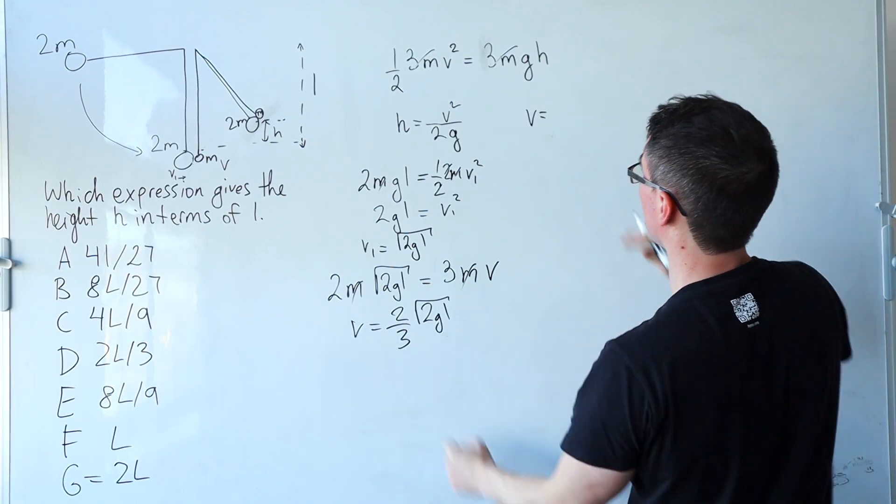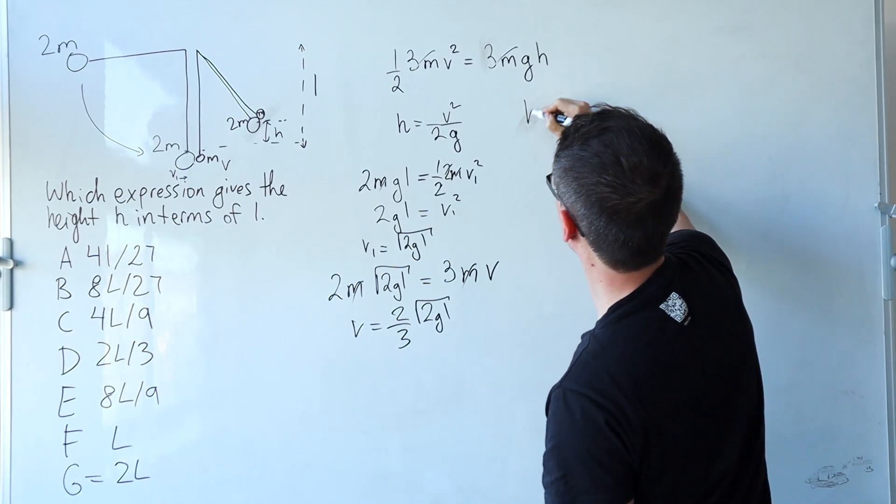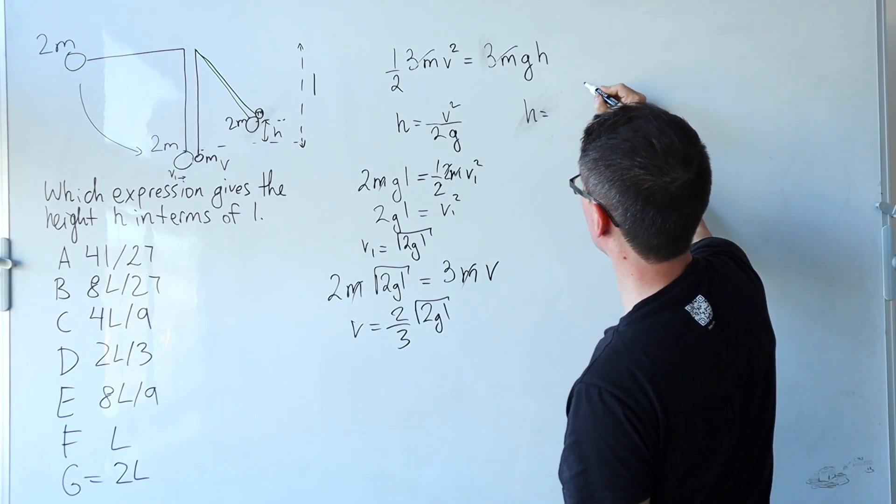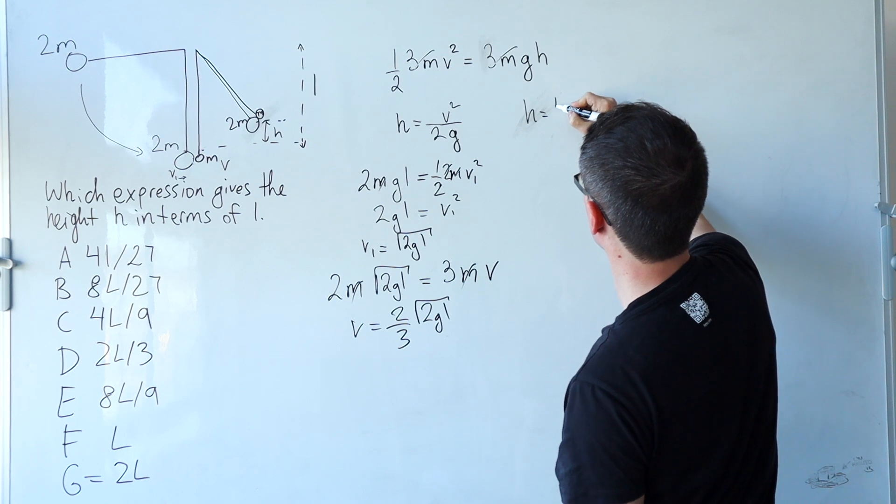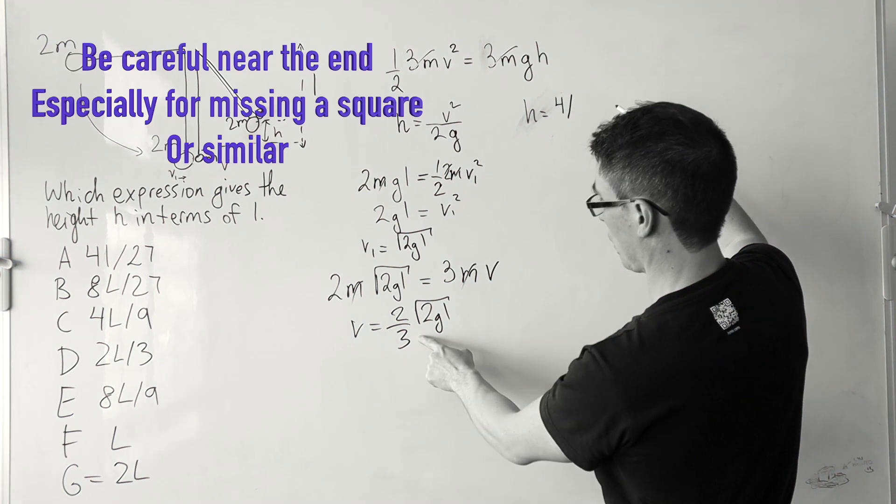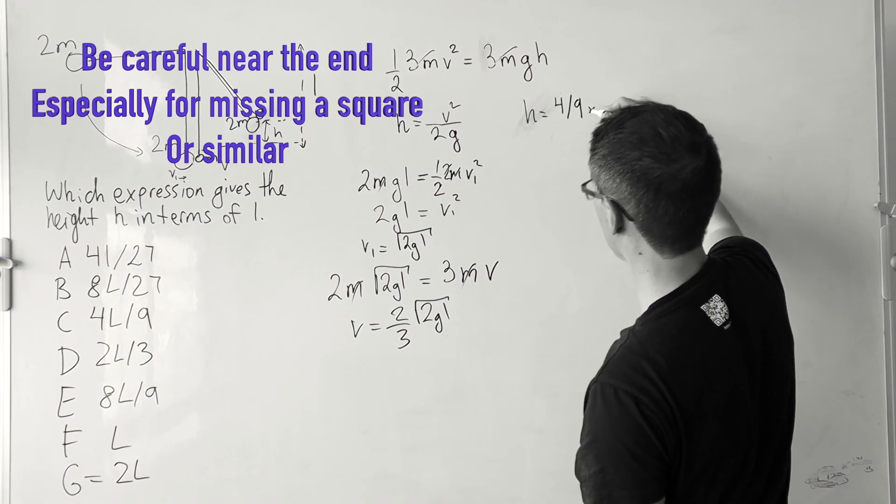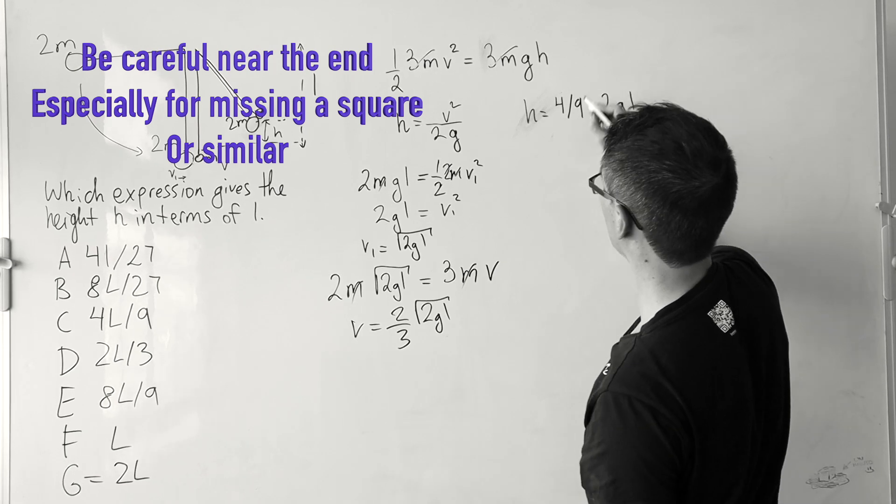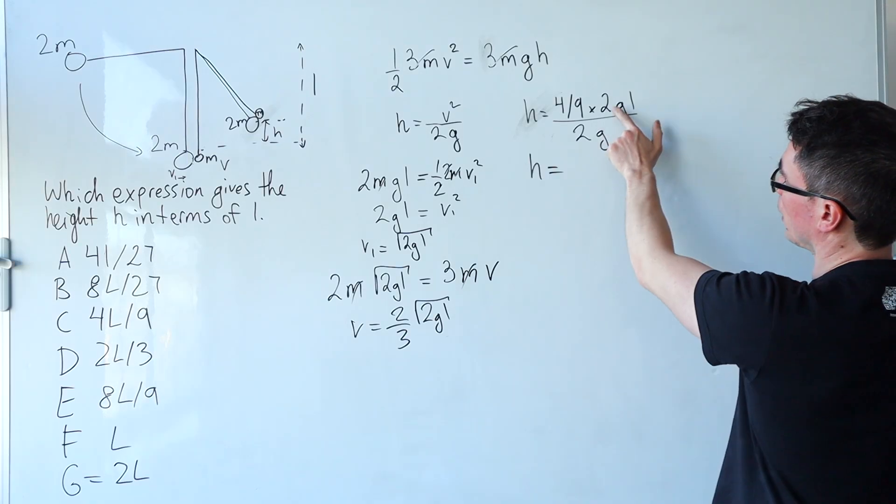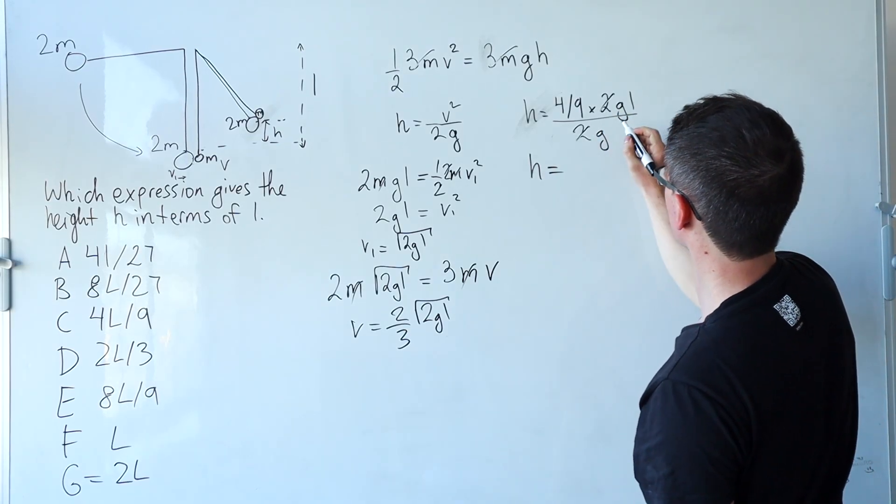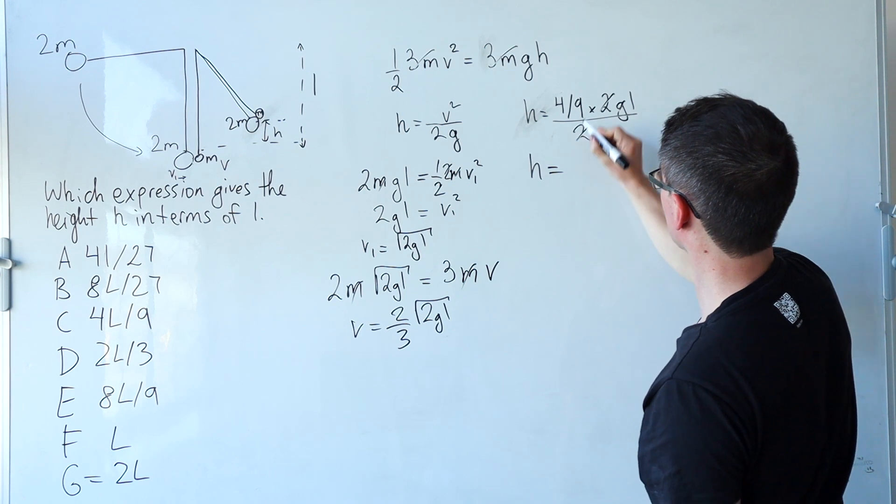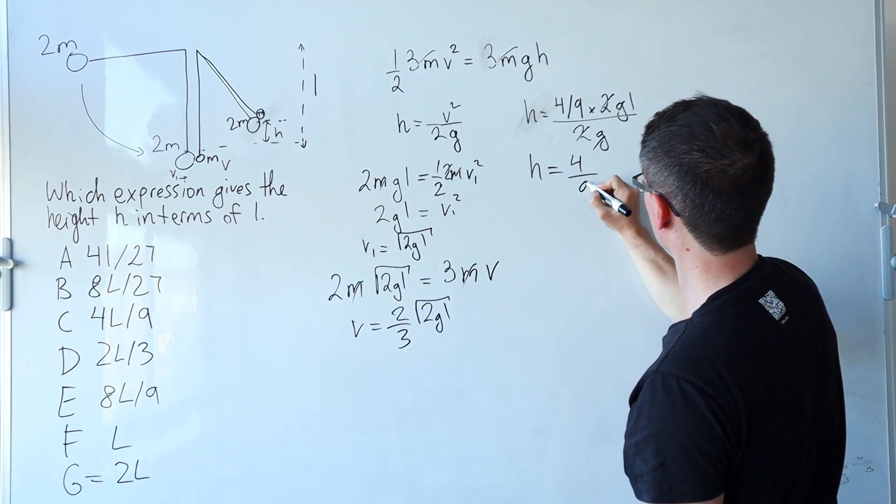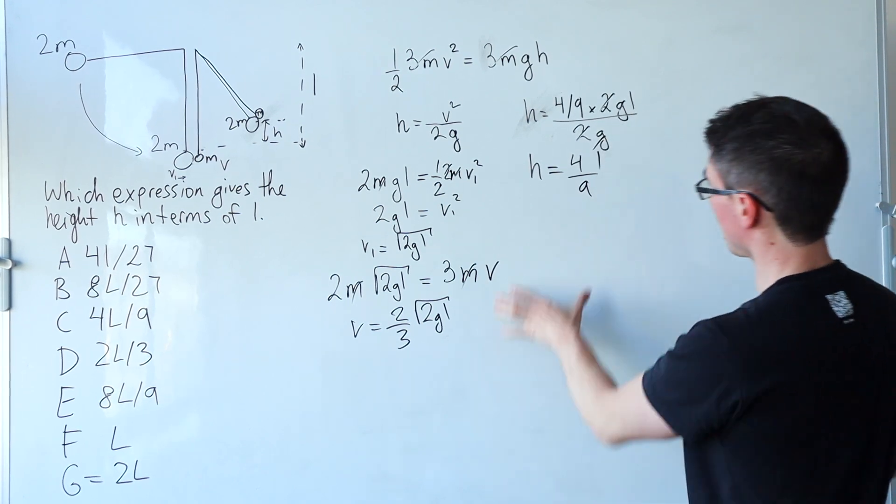Let's have a look. So H will be given by V squared. So V squared will be 4. Mistakes often happen near the end of the problem. And here I'm consciously slowing down and double-checking everything as I'm writing. Okay, those two are going to get cancelled out. G is going to get cancelled out. So what we're left with is 4 over 9 times L.